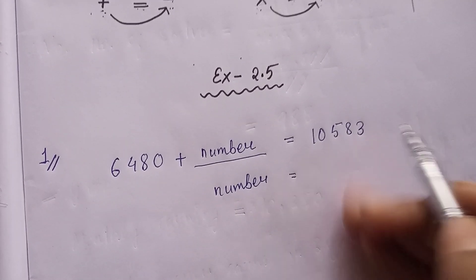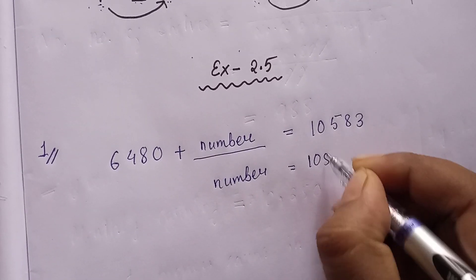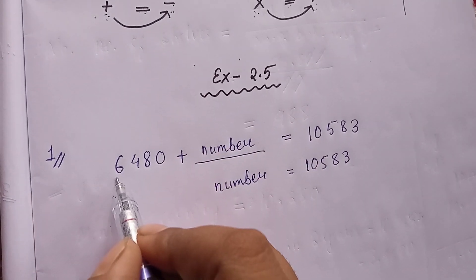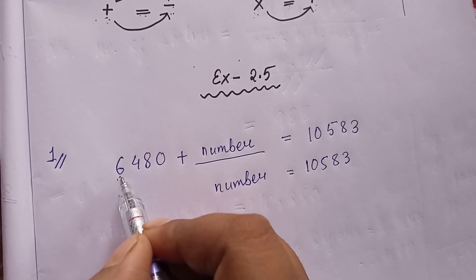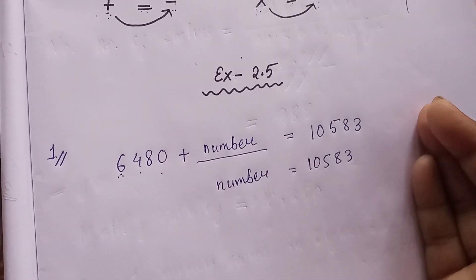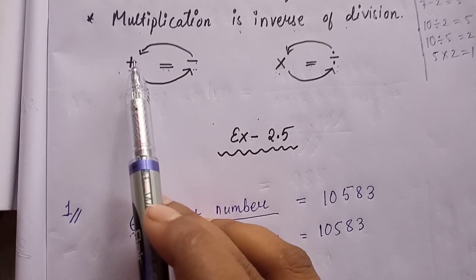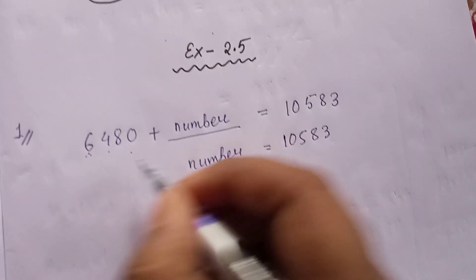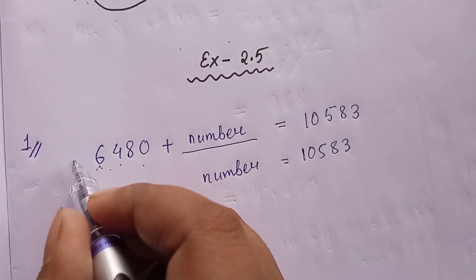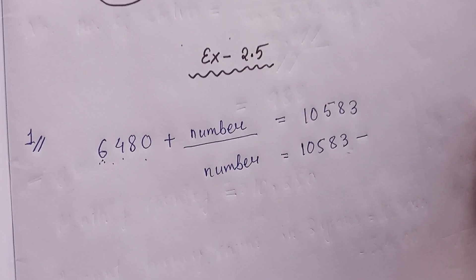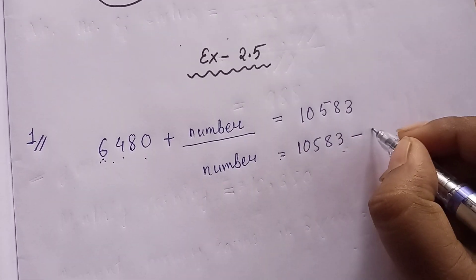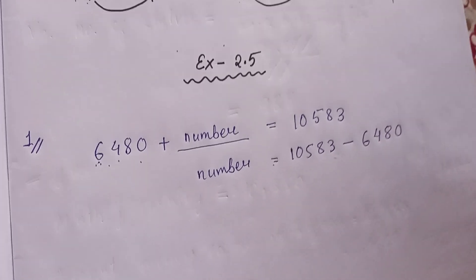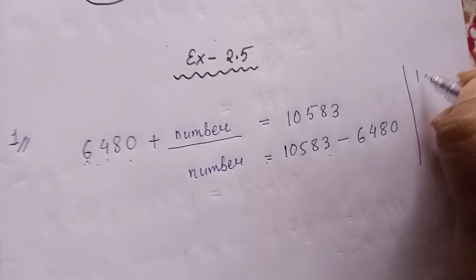On the right side we have only 10,583. We will bring 6,480 to the right side. As I explained, when a plus sign moves to the right side it becomes a minus sign. So it will become 10,583 minus 6,480.